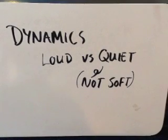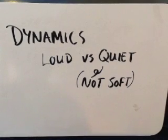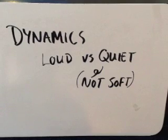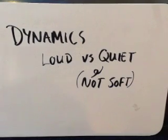In music, we have to have descriptions and symbols to tell players how loud to play something relatively. When music started out, they didn't have technology to measure it, and it would do no good to tell somebody to play at 75 decibels — that is a measurement of loudness, but most people couldn't gauge that with their own ears.